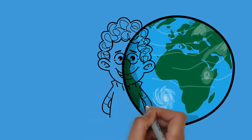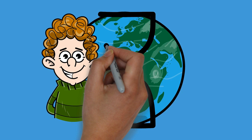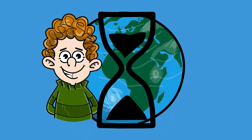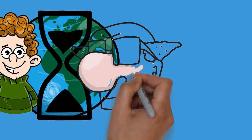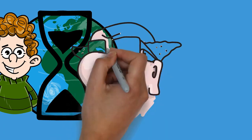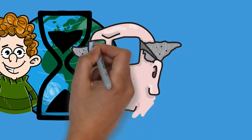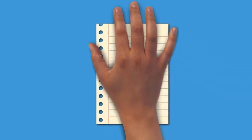In a broader sense, aging can refer to single cells within an organism which have ceased dividing, or to the population of a species. In humans, aging represents the accumulation of changes in a human being over time and can encompass physical, psychological, and social changes. Reaction time, for example, may slow with age, while memories and general knowledge typically increase.